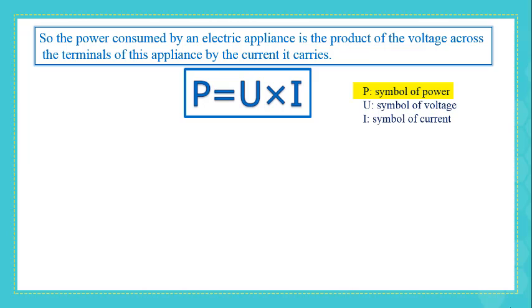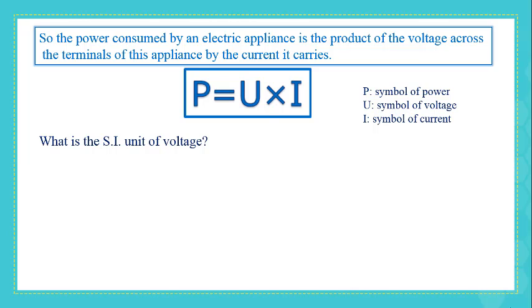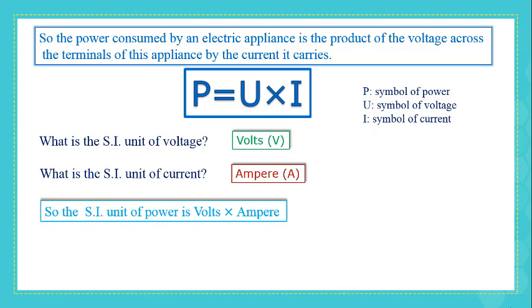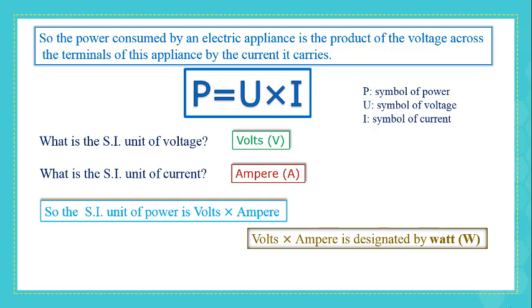P is the symbol of electric power. U is the symbol of voltage. I is the symbol of electric current. The SI unit of voltage is volts, and the SI unit of current is ampere. The SI unit of electric power is volts times amperes, which is designated by the letter W — the watt.